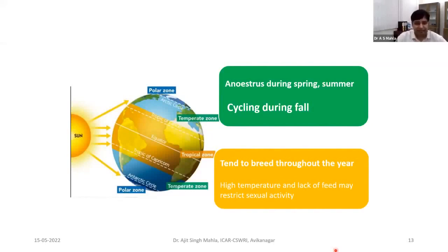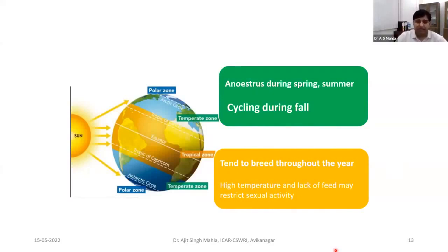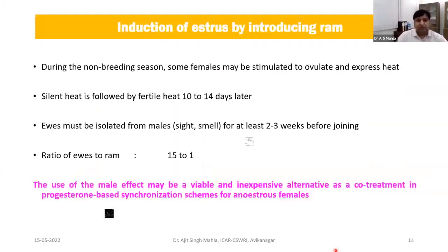In regions very far from the equator, like the temperate areas in Kashmir, high altitude Uttarakhand and Himachal, there may be some sort of seasonality. Animals in these temperate regions cycle during the fall season; otherwise they remain low-breeding-type animals. This seasonality depends mainly on photoperiodism. Whenever there is decreased length of photoperiod or light, GnRH will be released more from the hypothalamus and the animal will come into estrus.